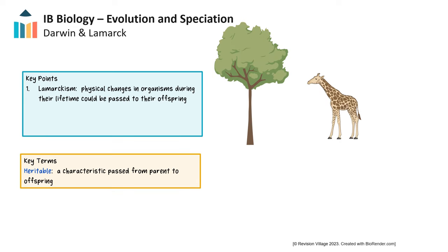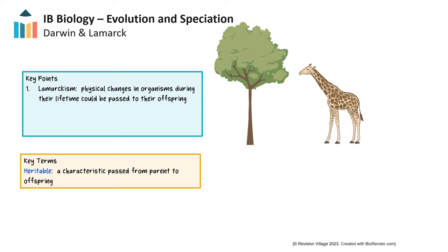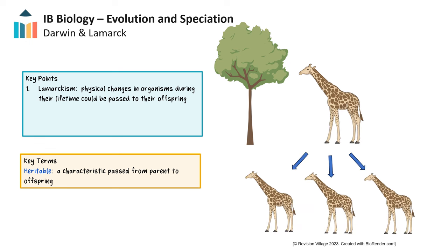Darwin made this distinction from his predecessor, Lamarck, who thought that physical changes in organisms during their lifetime could be passed to their offspring. This could be from increased use or developed over time. For instance, if a giraffe continually reaches for the taller leaves on a tree, the neck will stretch and that giraffe will produce offspring with longer necks.